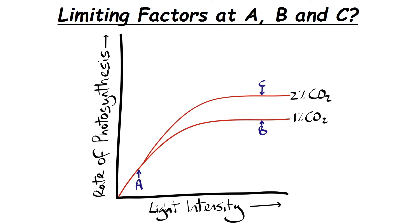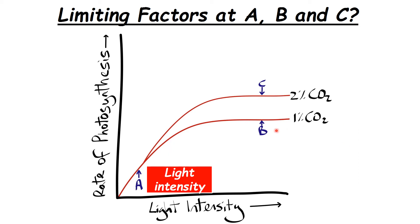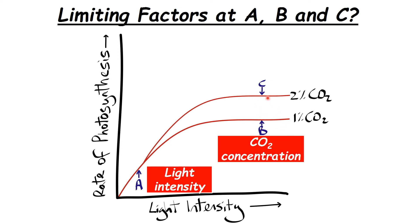Have a go at the graph question on light intensity and rate of photosynthesis — identify the limiting factor at points A, B, and C. A is light intensity (it's on the x-axis). At B, the two lines at 1% and 2% CO₂ diverge, so carbon dioxide is a limiting factor. C must therefore be temperature.